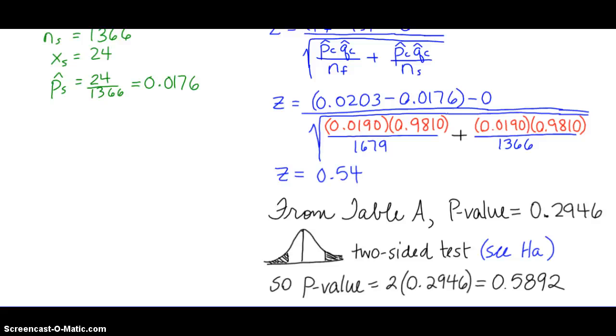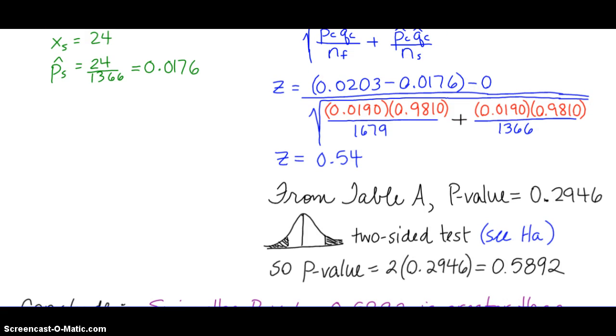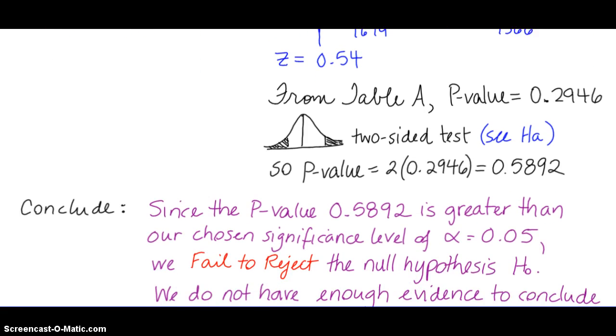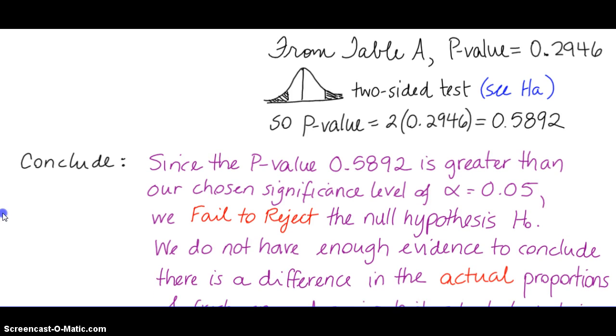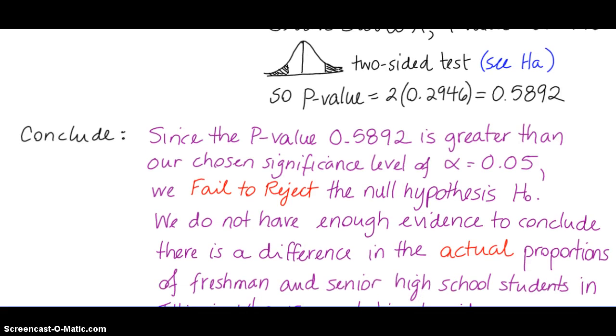We're almost done with this problem. The last thing that we need to do is conclude. And our conclusion, based on our p-value, is since we have a p-value of 0.5892, and it's greater than the chosen significance level of alpha equals 0.05, we fail to reject the null hypothesis.